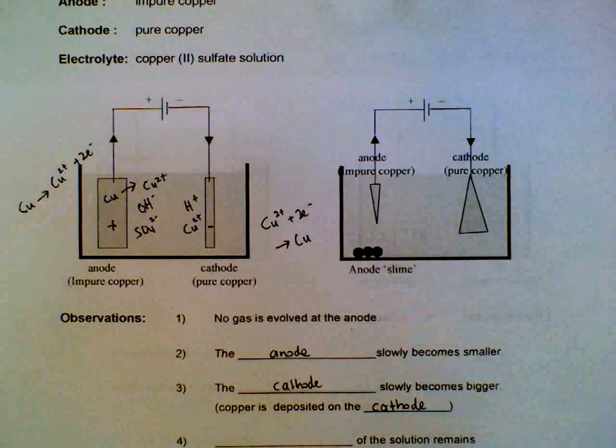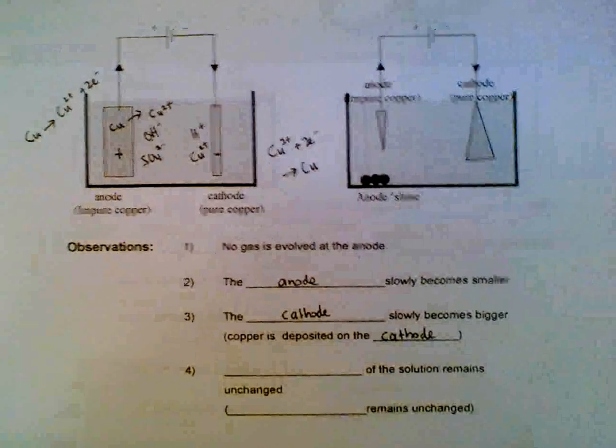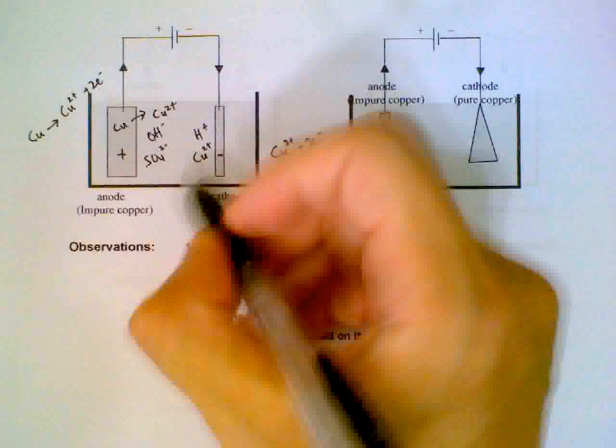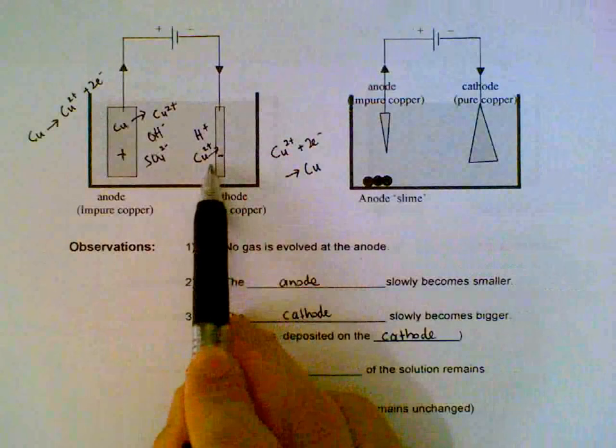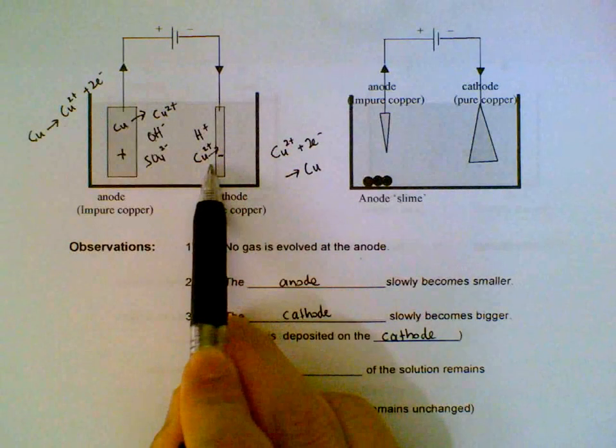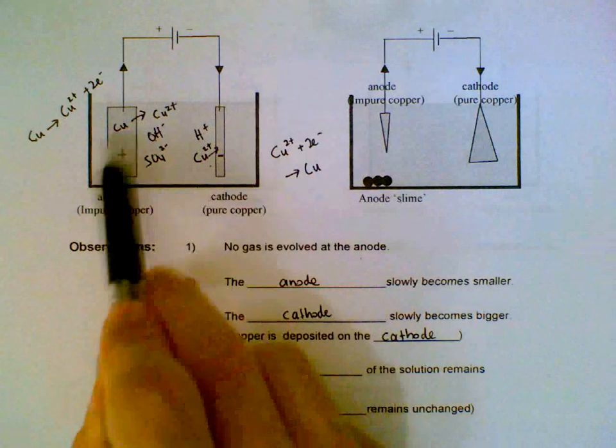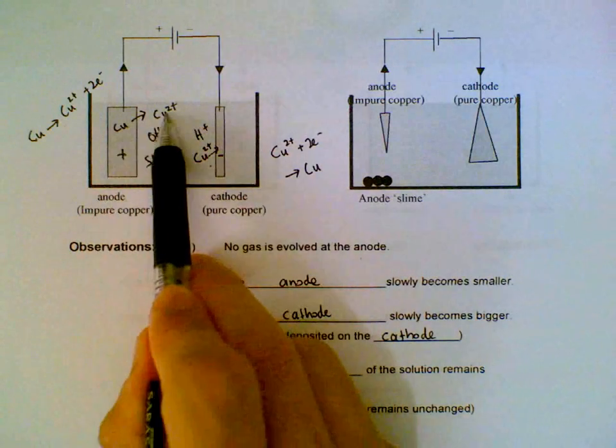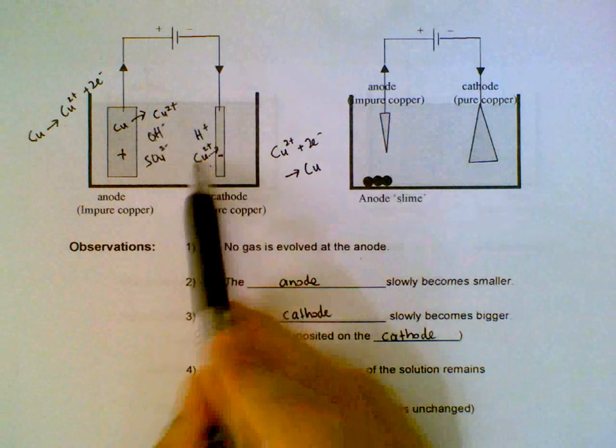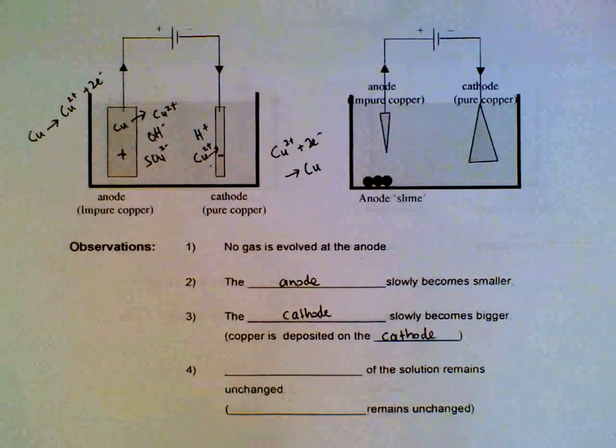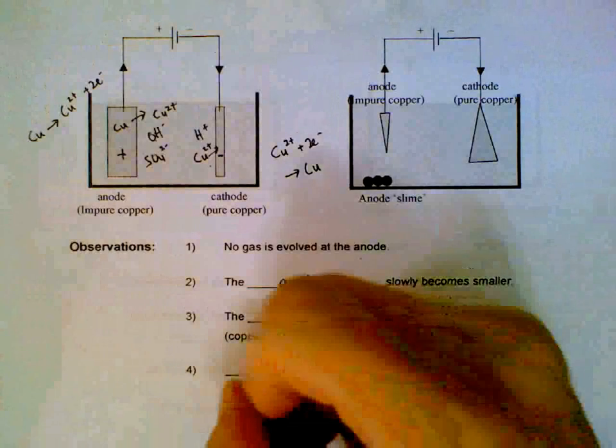The color of the solution - you should notice that for every copper ion that we remove at the cathode, there will be one copper ion created at the anode. So there's always a replacement when one is removed, so the color of the solution actually remains unchanged.